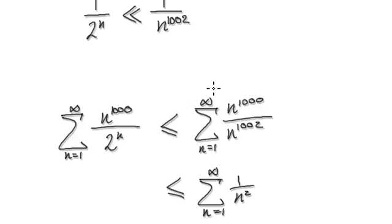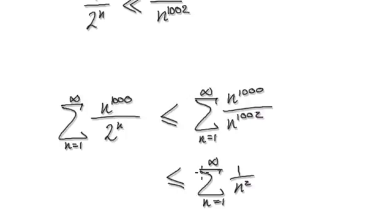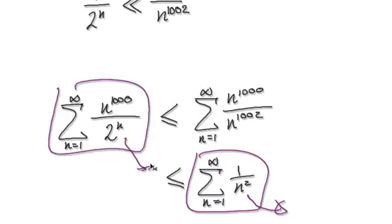Notice that we chose 1,002. You could choose 1,003, or anything higher, and you still know it's going to converge. So this series will converge, and therefore the original series will converge.